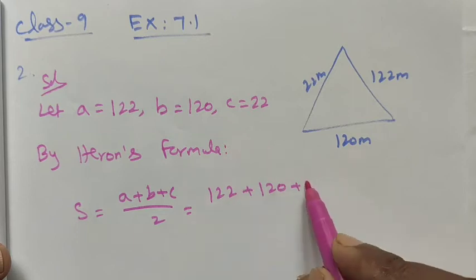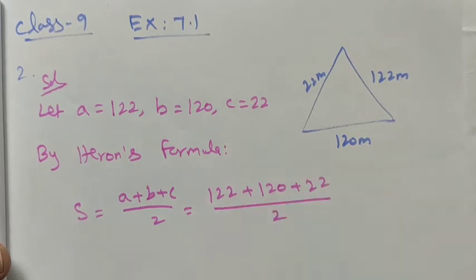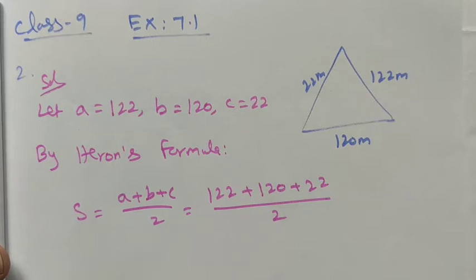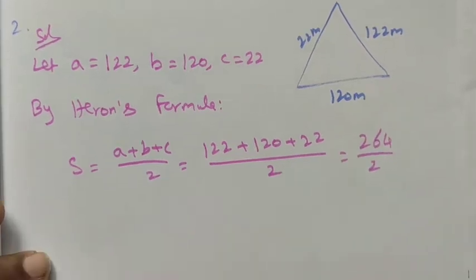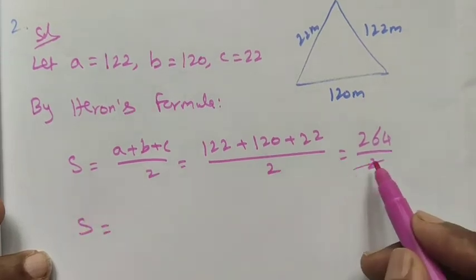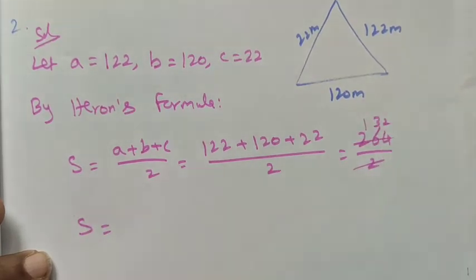The sum of this value is equal to 264 divided by 2. Then S is equal to 132. So S equals 132 meters.